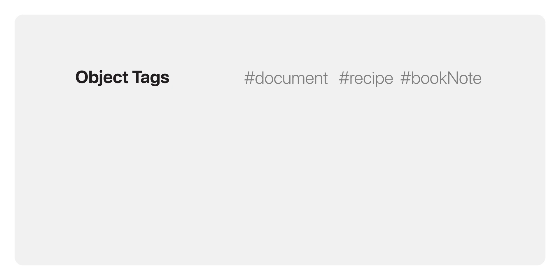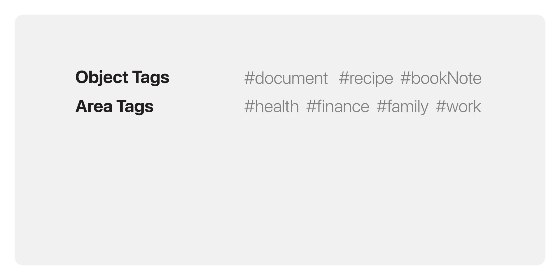Object tags make it easier to quickly identify the purpose of a note, allowing you to filter and gather similar types of information instantly. If you're familiar with the PARA method by Tiago Forte, you'll recognize the concept of areas. Just like in PARA, area tags in Forever Notes help categorize notes into major life domains like health, finance, family, or work. These areas represent the ongoing aspects of your life that rarely change — the consistent themes and responsibilities you deal with daily. Area tags make it simple to find everything related to a specific part of your life instantly.